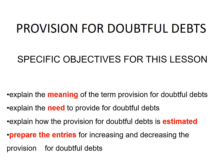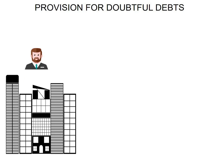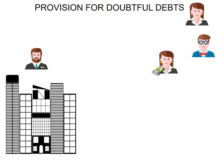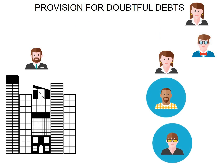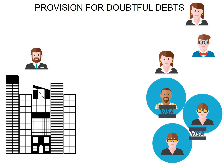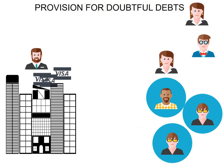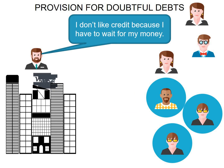Let's check out the following story. We have a business owner who has customers that pay in cash. Whenever these customers want a product, they give the business owner cash in exchange for the product — these are cash customers. The business owner says, 'I like cash because I get my money now.' But this business owner has another type of customer — these customers buy now and pay later, meaning they don't pay with cash; they buy on credit. And the business owner says, 'I don't like credit because I have to wait for my money.'